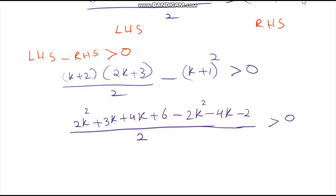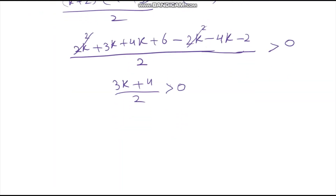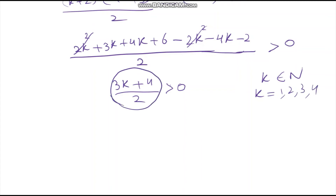Now 2k squared minus 2k squared gets cancelled. Combining: 3k plus 4k is 7k, minus 4k gives 3k. So we get 3k plus 4 by 2 should be more than 0. Since k belongs to natural numbers and can take values 1, 2, 3, 4 and so on, the entire left-hand side is positive. Therefore it is always more than 0.